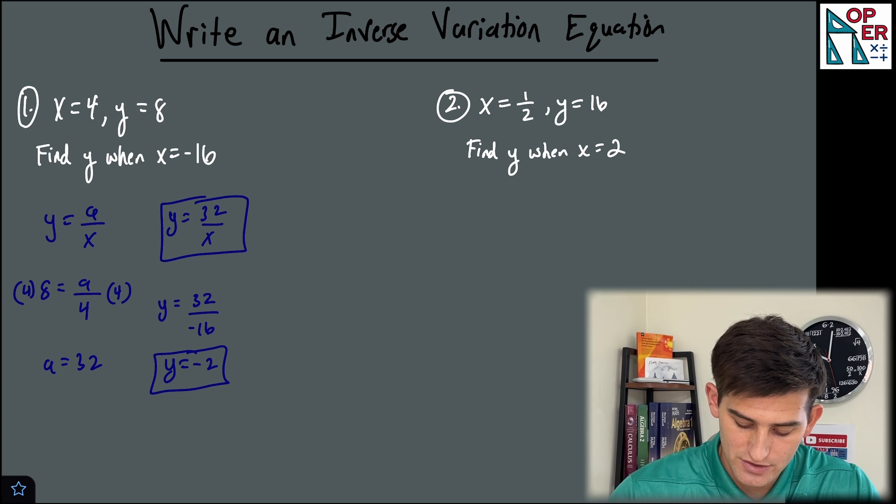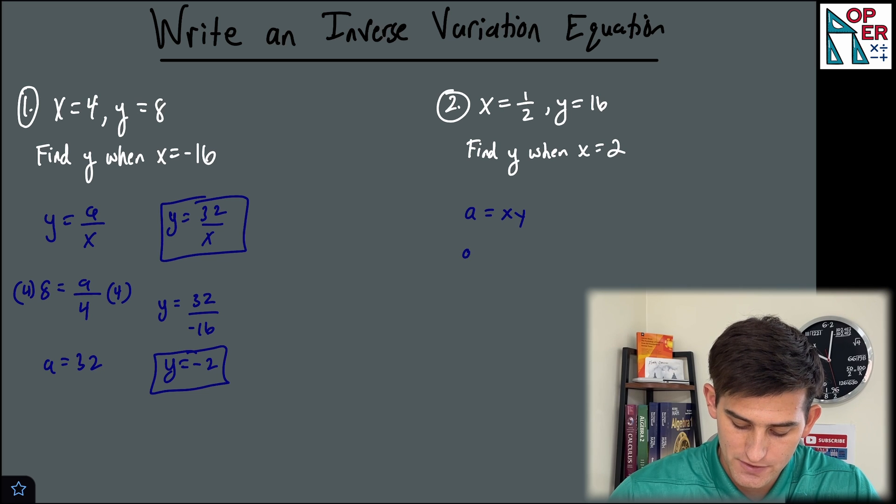So now we could just go ahead and say, hey, a is equal to x times y. So a is equal to one half times 16. So a is equal to eight.